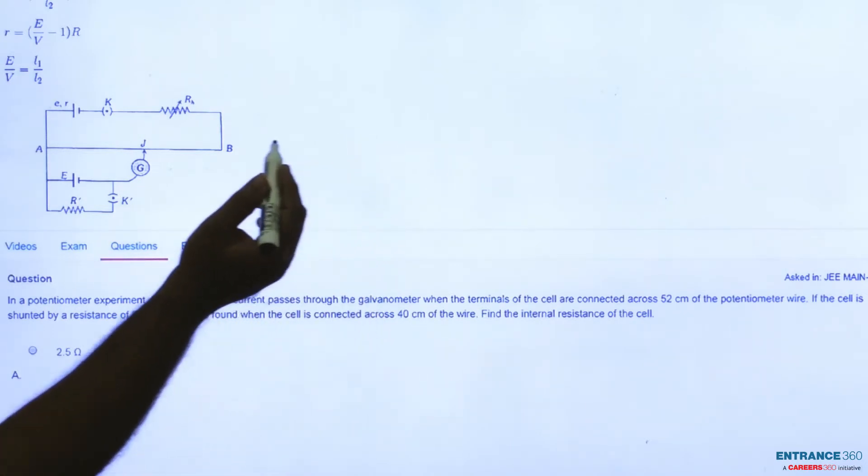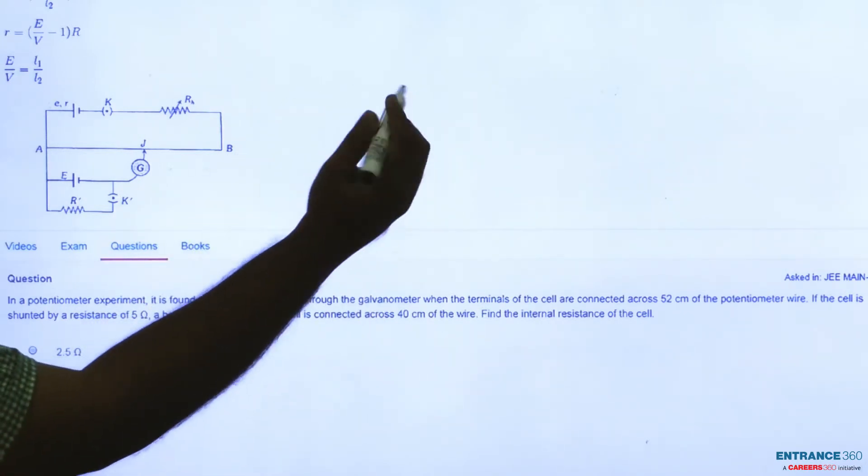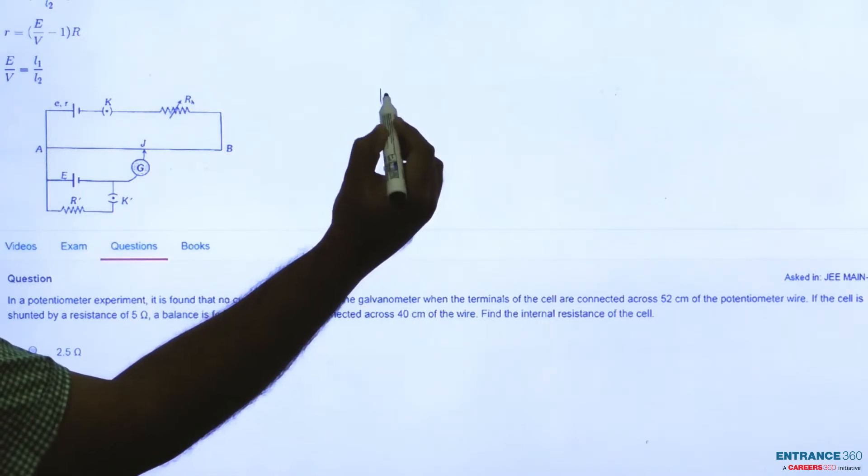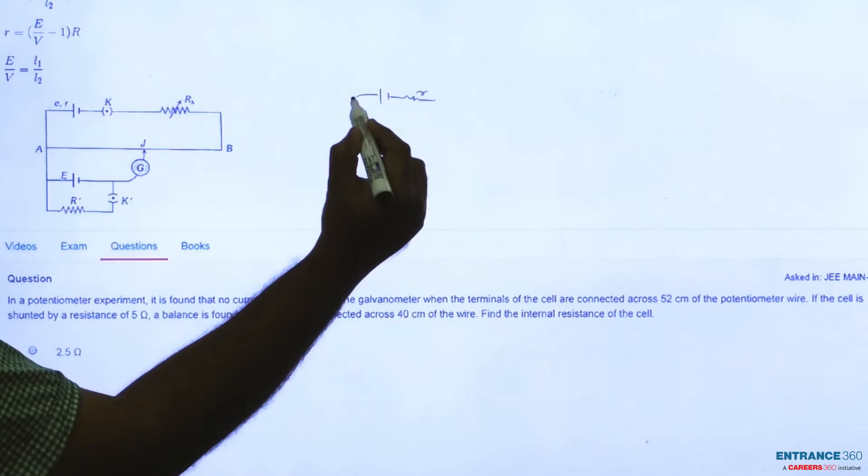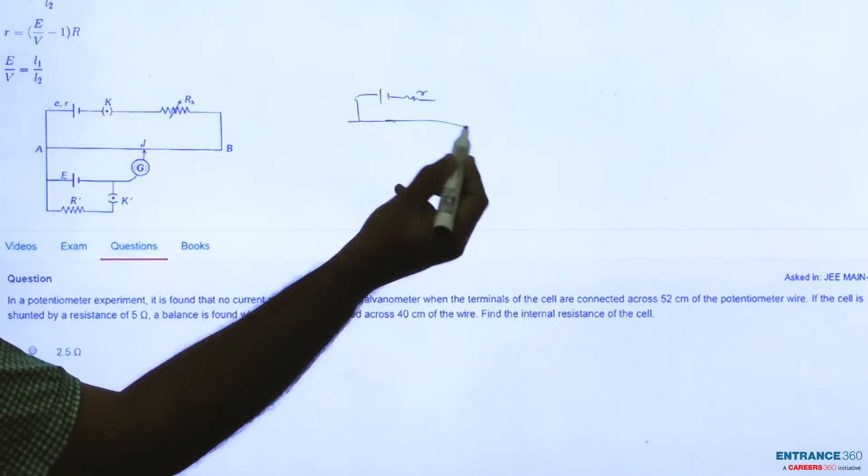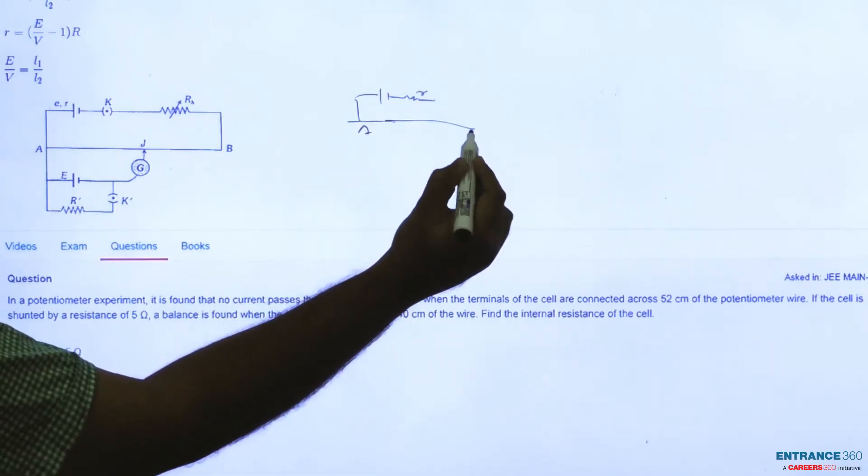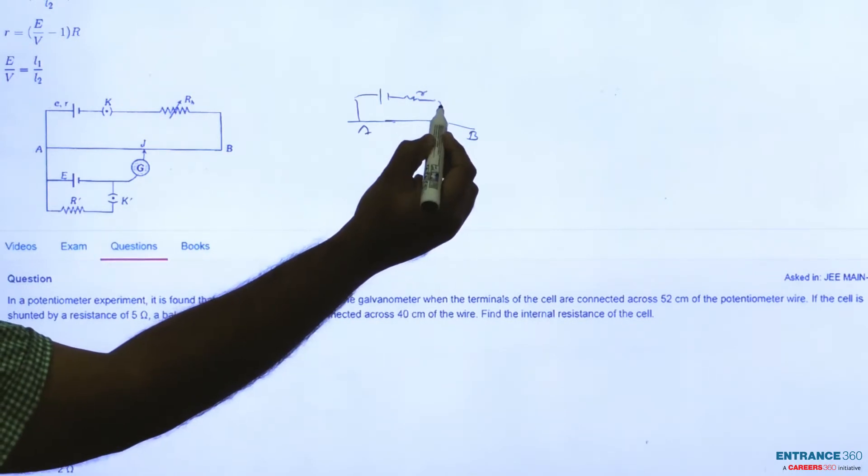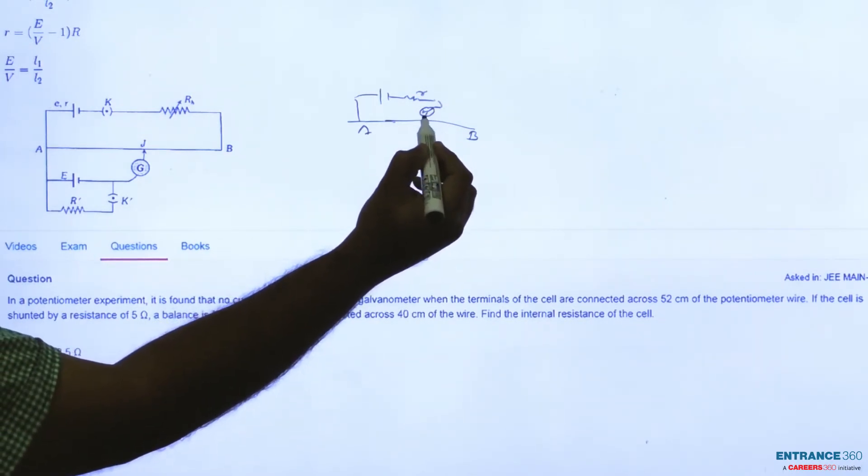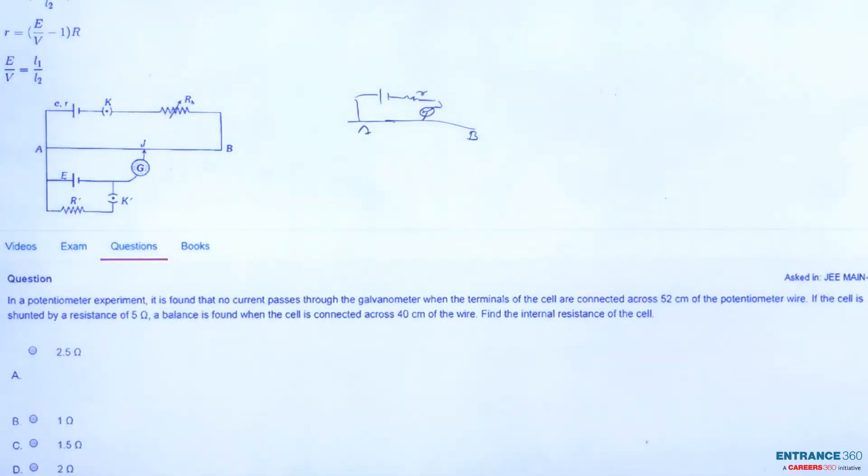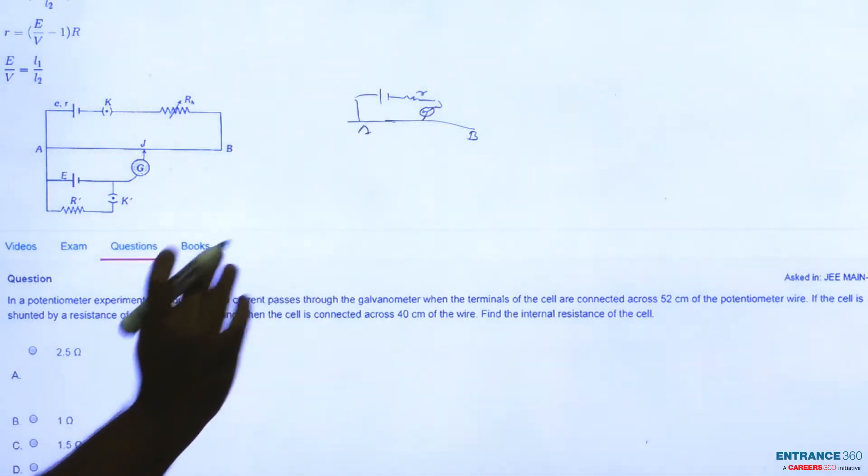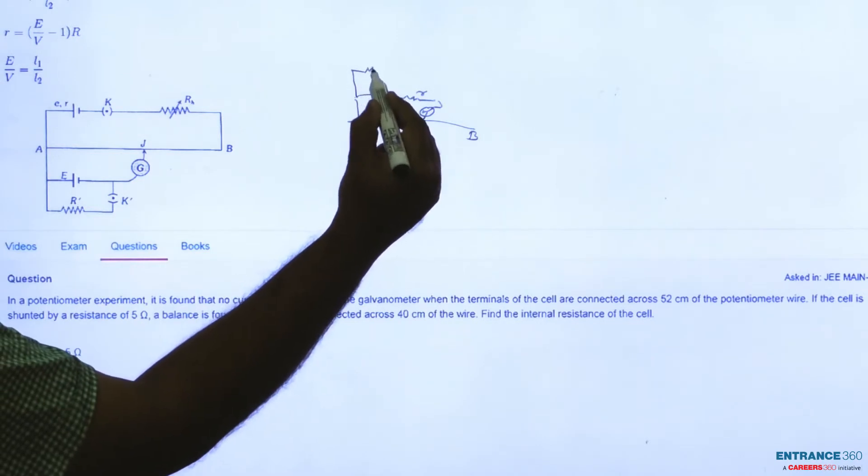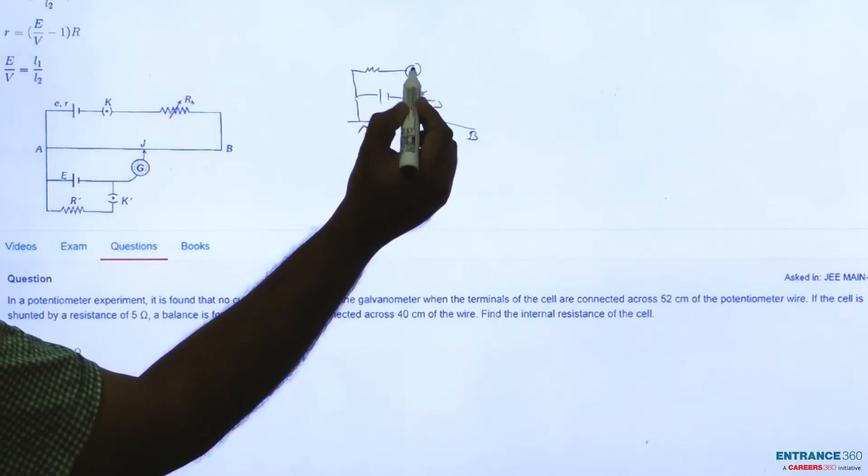For measuring the internal resistance of a potentiometer we will connect the cell of internal resistance small r with the potentiometer wire say AB of length L, and if galvanometer reads zero, we have a resistance R shunted with the cell.